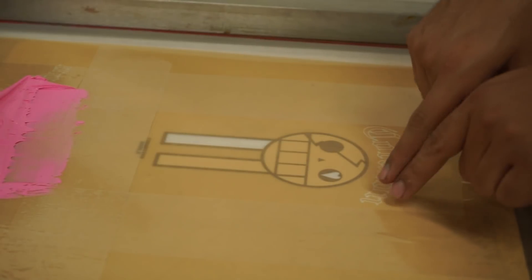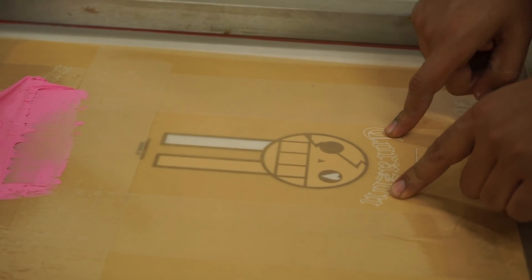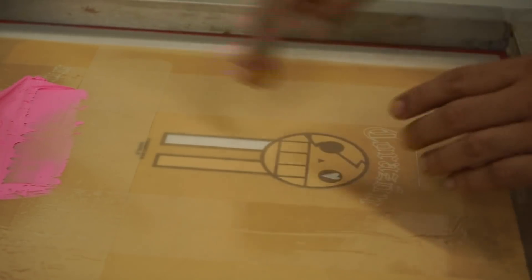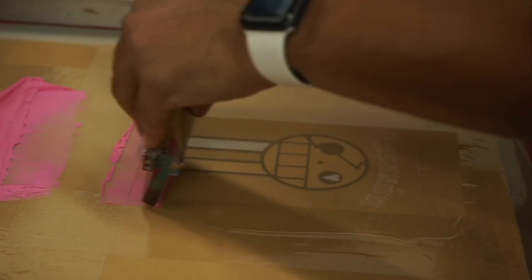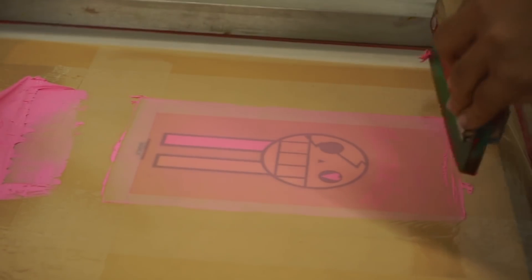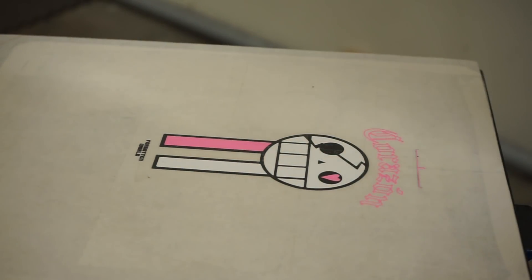Next color that I'm going to do for this design is going to be the pink, and the reason why is because the yellow lines up to the pink inside of the letters. Once we tape that up and we bring the yellow, we're going to make sure that everything is lined up before we print it.